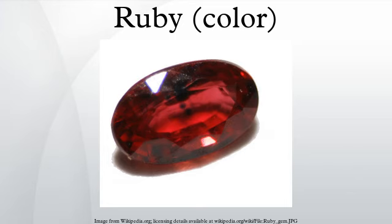The first recorded use of ruby as a color name in English was in 1572.